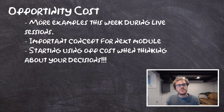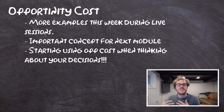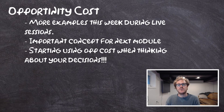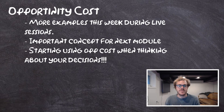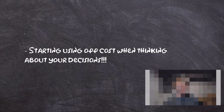For example, the opportunity cost of spending another hour studying at night is what you could have done instead. For some of you, your next best alternative might be another hour of sleep, chatting with your friends or family, or watching an hour-long show on Netflix. You'll start to realize that there's opportunity cost in every decision you make.